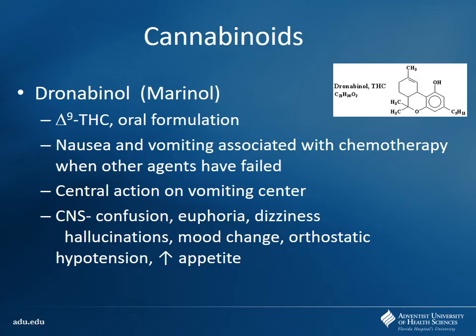Dronabinol can cause some euphoria, so it is a controlled substance — I believe a Schedule III. Schedule I drugs have no medical use; Schedule II includes things like Percocet; Schedule III has lower abuse potential. It must be kept locked up in the pharmacy. CNS effects include potentially rare hallucinations, but it's generally well tolerated. The increased appetite can be beneficial for some patients but problematic for those who are already overweight. And importantly — since it's the same chemical as THC — it will show up positive on a urine drug screen, just like dronabinol would.